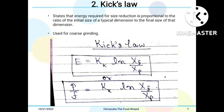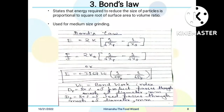Kick's law states that the energy required for size reduction is proportional to the ratio of the initial size to the final size of a typical dimension. Kick's law is used for coarse grinding. The equation is: E = K_K × ln(X_F / X_P), also written as power divided by feed equals K_K × ln(X_F / X_P), where X_F is the average initial size of feed particles, X_P is the average size of product particles (both in meters), K_K is Kick's constant, P is power, and F is feed.